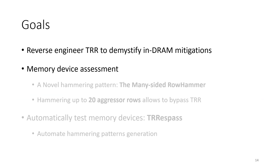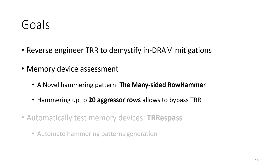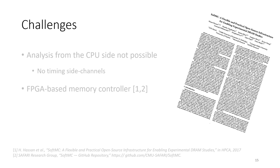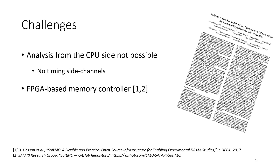Our goal is to reverse-engineer INDRAM target row refresh to shed light on the actual implementations. We aimed to evaluate memory module security and tested our DIMMs against a novel hammering pattern dubbed the many-sided rowhammer — a completely new pattern that allows bypassing target row refresh by hammering up to 20 rows cherry-picked in a specific way. To automate memory testing without relying on reverse-engineering techniques, we built Trespass, the first row fuzzer able to automatically generate hammering patterns. Since DRAM is synchronous and the mitigation is designed directly inside the circuitry, analysis from the CPU side is not feasible, as we are missing side channels. For this reason, we used the SoftMC infrastructure, providing an FPGA-based memory controller with full control over DRAM commands — including the ability to completely disable refresh operations.